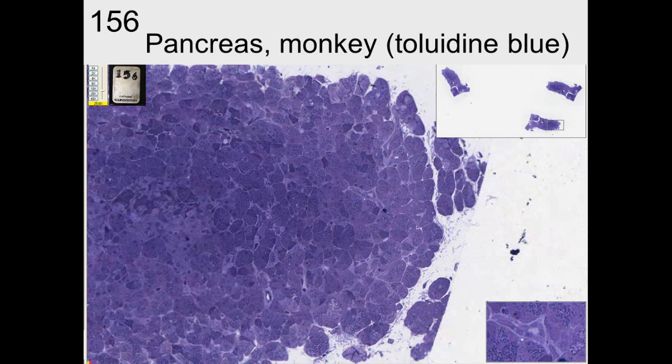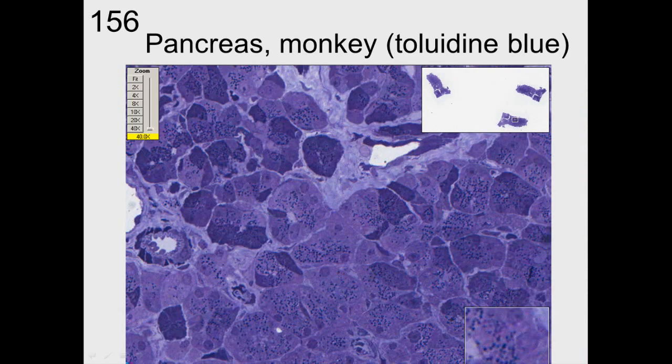Here we see the pancreas of a monkey with toluidine blue. If you go to a higher mag of that, you can see that the secretory granules near the apex, near the lumen, are very dark and dense. With toluidine blue, you look for the size and the density of things.